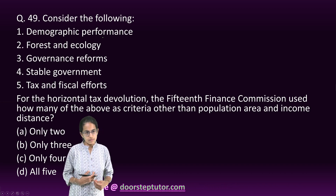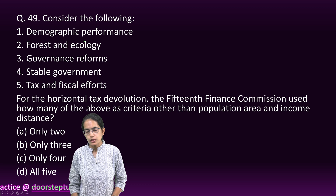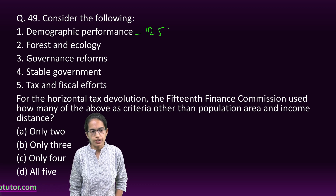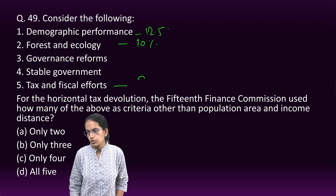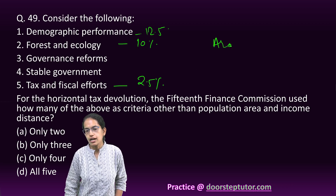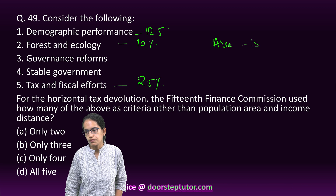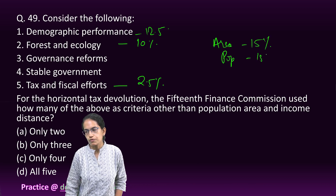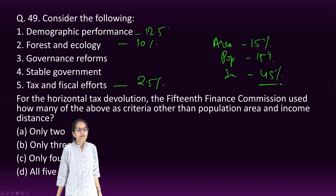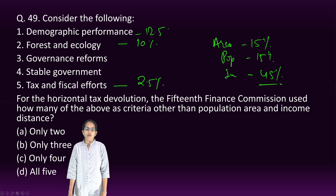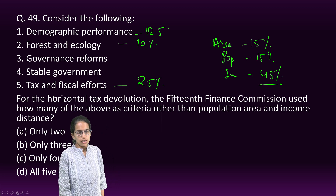On the 15th Finance Commission criteria: Demographic performance accounts for 12.5%, forest and ecology for 10%, tax effort for 2.5%, area for 15%, population for 15%, and income distribution for 45%. Among the given options, three of the listed criteria are part of the 15th Finance Commission's devolution formula.